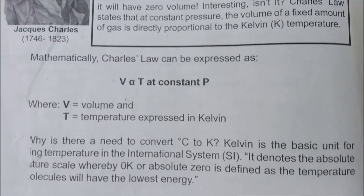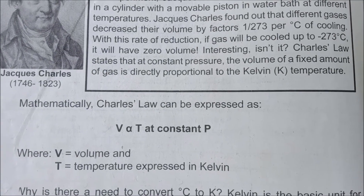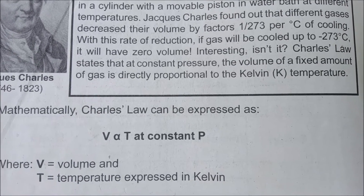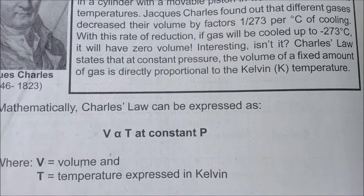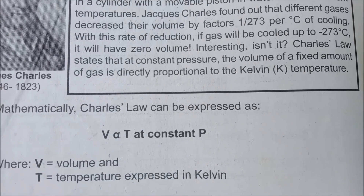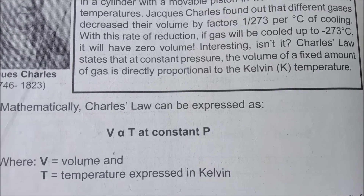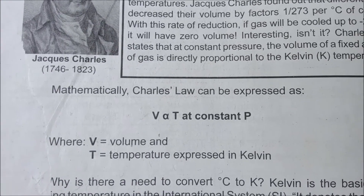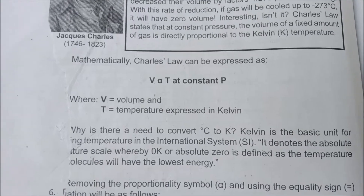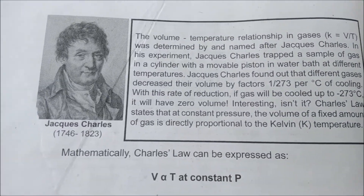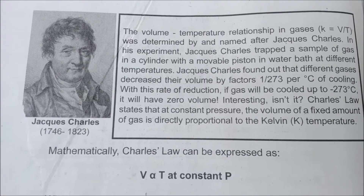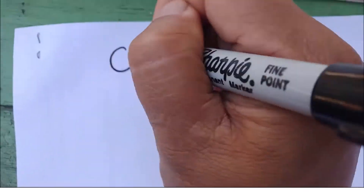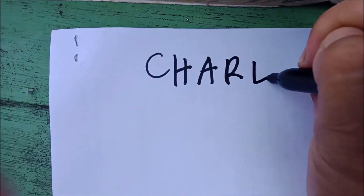That's the reason behind the temperature conversion review. When converting temperature, you may convert from degrees Celsius to Kelvin, or from Kelvin to degrees Celsius. Some problems may give temperature in Fahrenheit, so you need to convert it first into degrees Celsius and then into Kelvin. The temperature used in Charles' Law must be expressed in Kelvin. Now let's write the formula for Charles' Law.